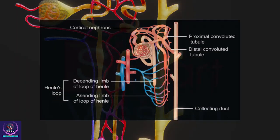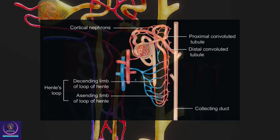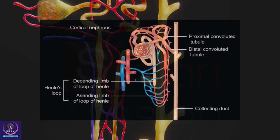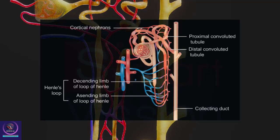Cortical nephrons: In most nephrons, the loop of Henle is very short and extends only very little into the medulla. These are called cortical nephrons.